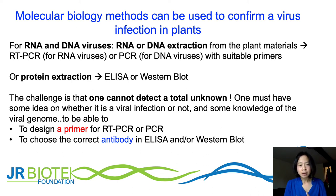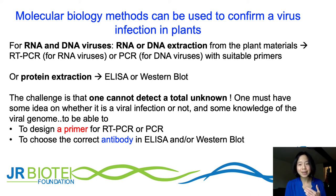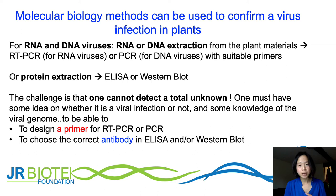One key point about using molecular biology to study virus infection: you need to have an idea of what kind of virus you suspect is infecting your plants. This is because to do PCR you need to design a primer — a short complementary nucleic acid strand that targets and anneals to your target sequence in the virus. You cannot detect a totally unknown virus with this method. The same applies to ELISA and western blot, where you need to know the virus in order to choose the correct antibody to target the virus protein of interest.